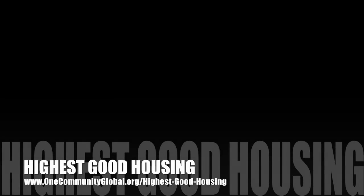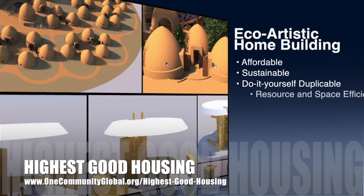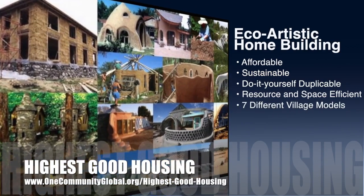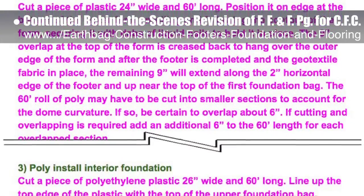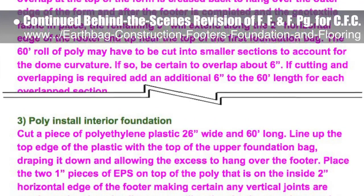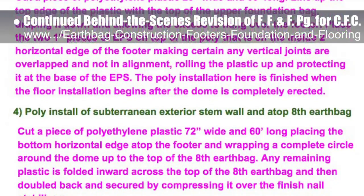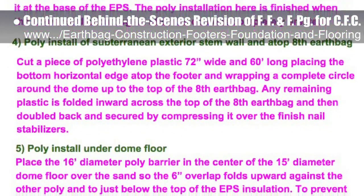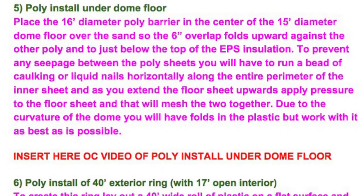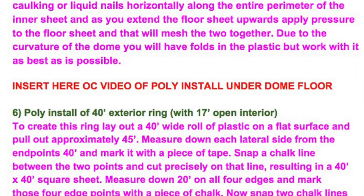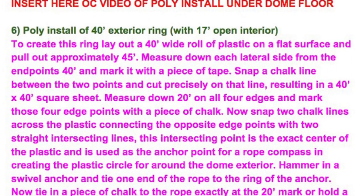The One Community approach to highest good housing is eco-artistic home building that is affordable, sustainable, do-it-yourself duplicable, resource and space efficient, and consists of seven different sustainably constructed village models. This last week, the core team put another 10 hours into the behind-the-scenes revision for the footers, foundations, and flooring page for the crowdfunding campaign we are developing. This week's focus was determining and describing step-by-step applications of polyethylene to various locations within the FFF CAD drawing, particularly focusing on poly determinations of cutting pieces in single sheets and forming two existing shapes, adding poly narrative for section 6 construction of footer, and adding poly narrative for section 11 construction of stem walls and dome interior foundation around the 12-inch EPS. We also added the poly details for under the dome floor section and the exterior dome ring section. We'd say we are now 76% complete with this total update and rewrite behind the scenes.